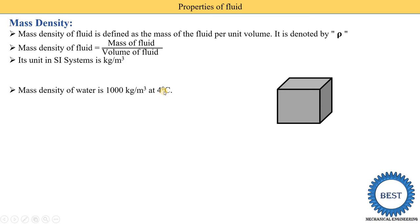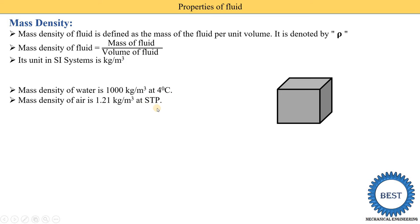The density of water is 1000 kg per meter cube at four degrees centigrade, meaning 1000 kg of water fills this one meter cube tank. If instead we fill air, then 1.21 kg of air fills the tank at standard temperature and pressure (STP). So the mass density of air is 1.21 kg per meter cube.